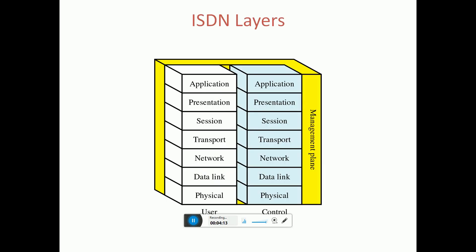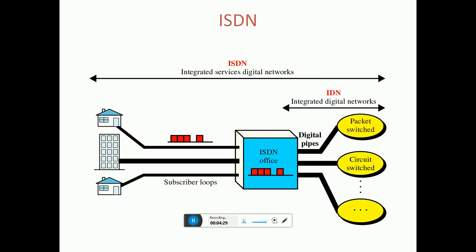ISDN layer technologies use seven layers: application layer, presentation layer, session layer, transport layer, network layer, data link layer, and physical layer. The controller side also uses the same seven layers. This is the ISDN integrated circuit diagram. Thank you — please subscribe and like the Tech Dude channel.